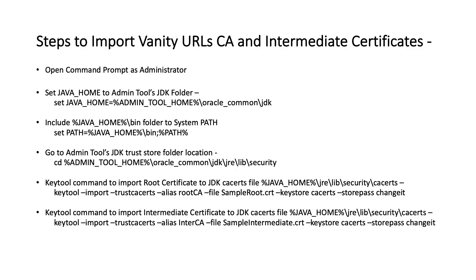Steps to import vanity URL's CA and intermediate certificates: open Command Prompt as administrator, set JAVA_HOME to Admin Tool's JDK folder, and include the JAVA_HOME bin folder in the system path.